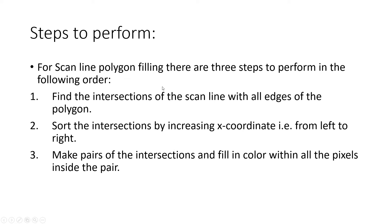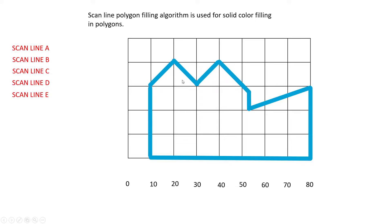Let's get started. These are the steps you perform in the scanline polygon fill algorithm. Watch this video completely — I'm going to cover all the special cases with proper examples. Step one: find the intersections of the scanline with all edges of the polygon. Step two: sort the intersections by increasing x coordinate, left to right. Then make pairs of intersections and fill in the color for all pixels inside each pair.